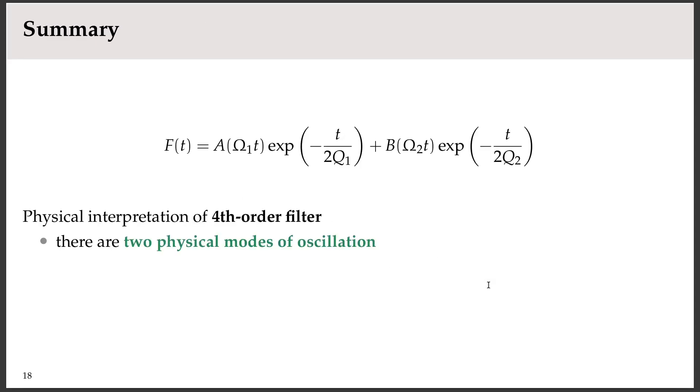Well, that brings me to the summary. So I'm just putting up the time domain response for the fourth order filter with two q values. Let me just give a few what I would say are the important physical interpretations of the fourth order filter. Well, in a system described with this fourth order filter, there are two physical modes of oscillation. Two different things are oscillating when you have a fourth order filter, and each of these oscillating things has a different decay rate or a different q.